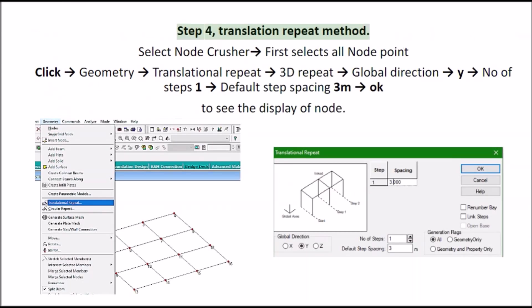Step 4, translation repeat method. Select node crusher. First select all node point, click geometry, translational repeat, 3D repeat, global direction. Y No of steps 1. Default step spacing 3M. OK.